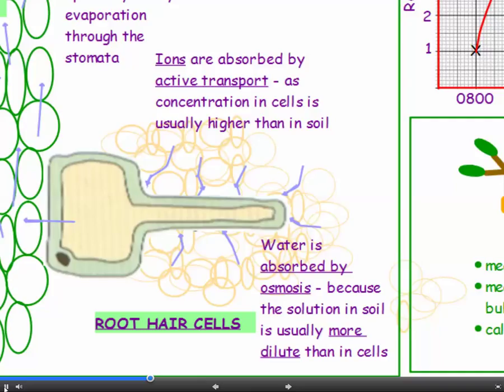So here's the root hair cell again and you can see it's surrounded by soil particles. Now ions in the soil solution are absorbed by active transport because the concentration of ions in the cells is usually higher than in the soil. So the ions have to be moved against the concentration gradient. But water is absorbed by osmosis. It's always osmosis where water is concerned because the solution in the soil is usually more dilute than in the cells.